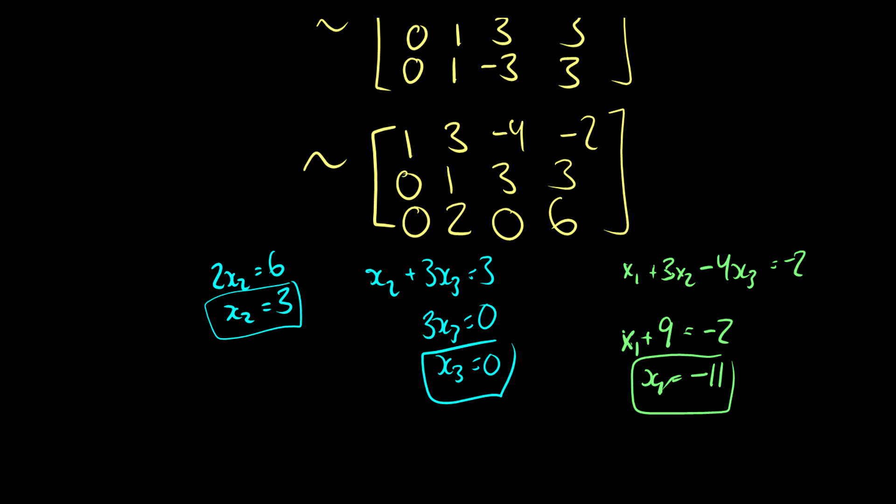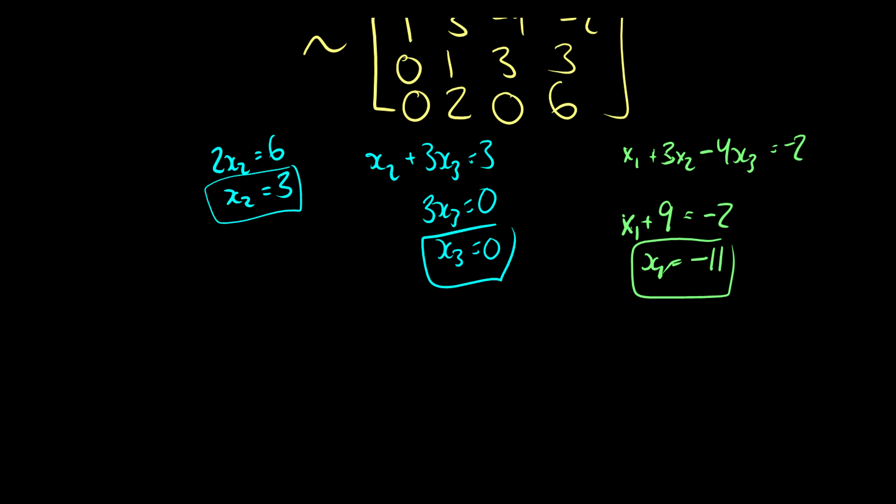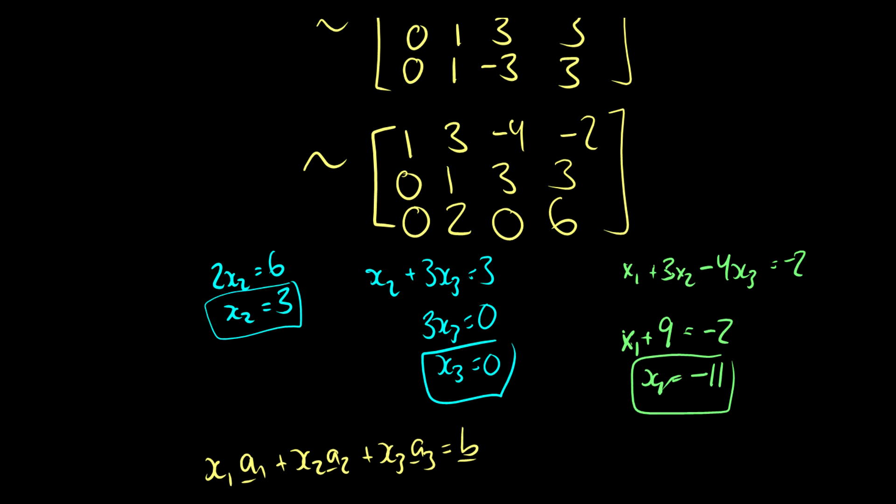So with this, we can find a solution. And we can say that if we take, remember our solution, x1a1 plus x2a2 plus x3a3 is equal to our vector b, we can say, well, it should be negative 11a1, negative 11a1 plus 3a2 is equal to our vector b.